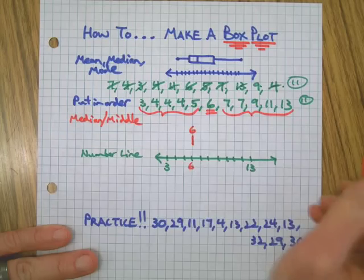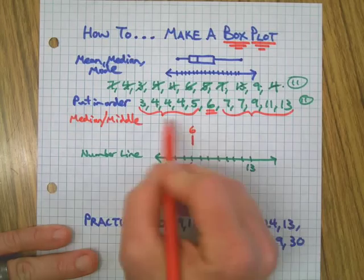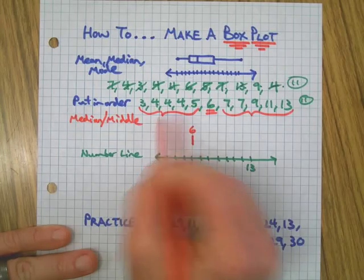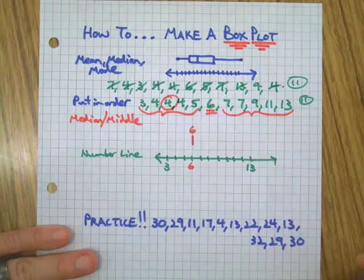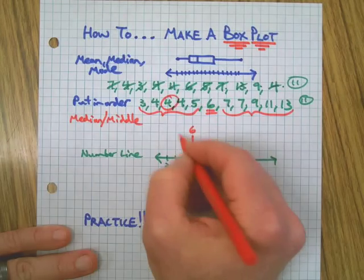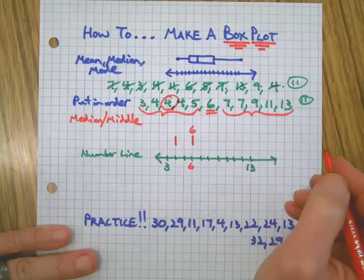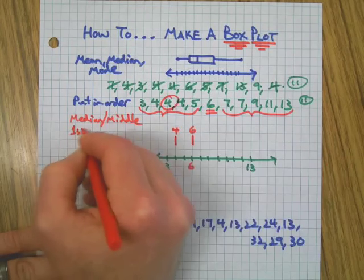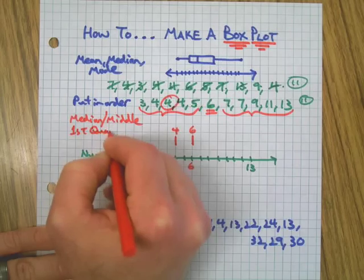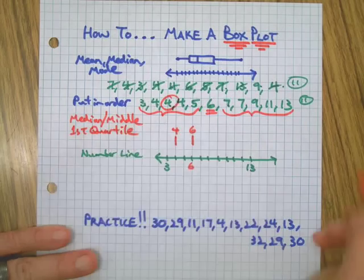Next, we take the median of the lower half of this data set, which in this case is 4, and we put a bar there. By the way, 4 is called the first quartile.